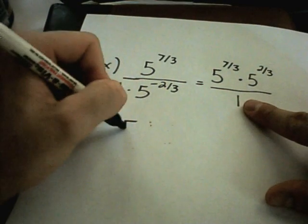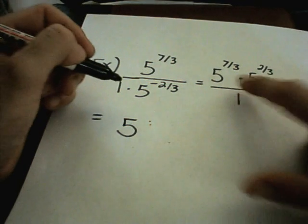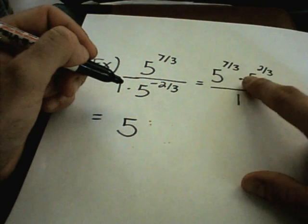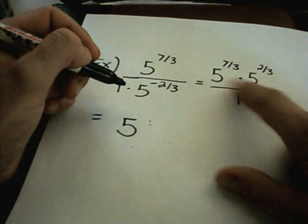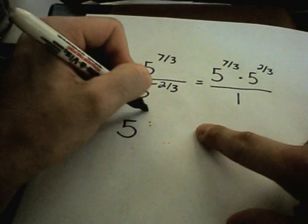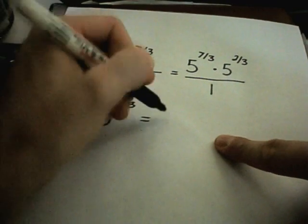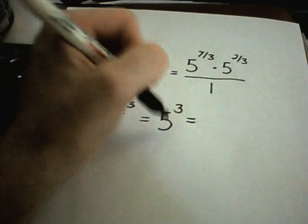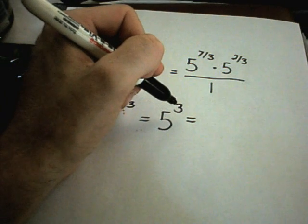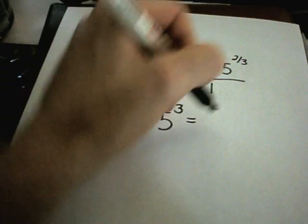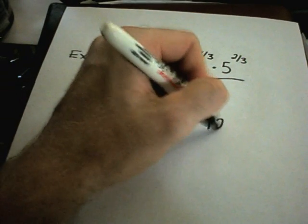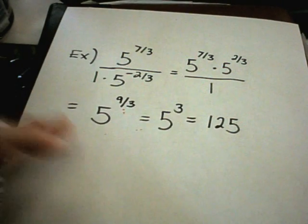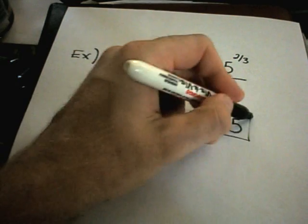Anything divided by 1 is itself, so I'm going to get rid of the 1. 7 thirds plus 2 thirds, remember I have like bases, I add the exponents. That's 9 thirds. Well, 9 divided by 3 is 3. And recall that 5 cubed is just 5 times 5, which is 25. And 25 times 5, which is 125. That would be your solution to this problem.